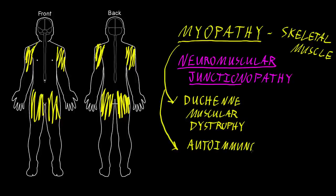There are also a number of autoimmune myopathies where the immune system is actually attacking skeletal muscle. Most of these actually cause inflammation of the muscle, and we call muscle inflammation myositis. Some of these autoimmune myositis conditions only affect skeletal muscle, while some also involve inflammation of other tissues such as the skin, which can lead to certain kinds of rashes.